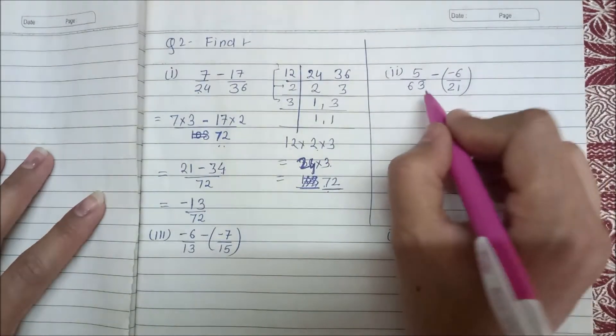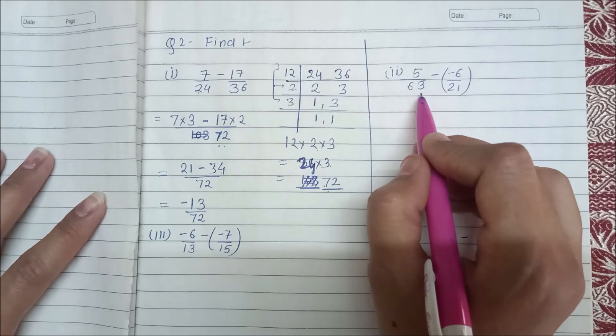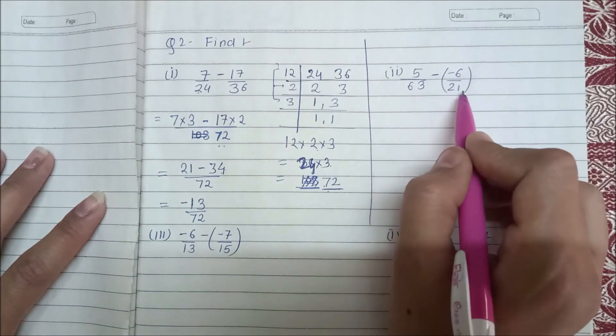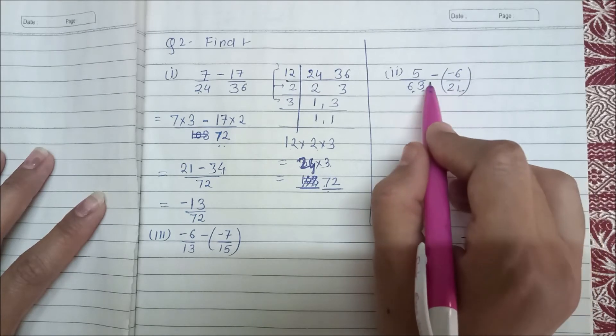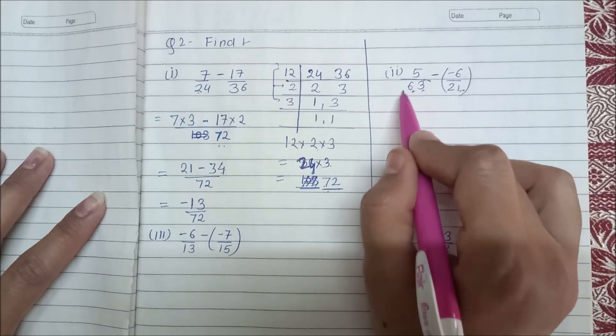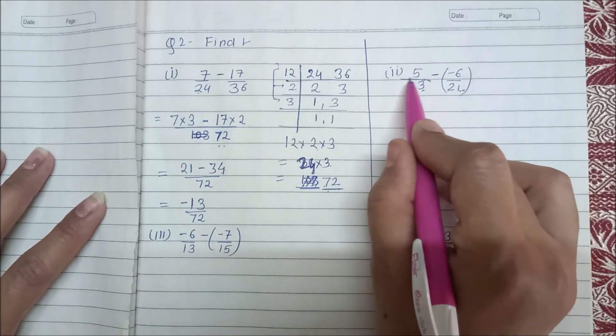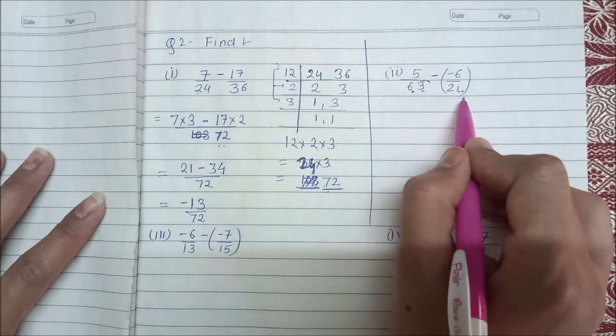Next we will see. We have given 5 upon 63 minus 6 upon 21. Here we have to find the common denominator. I have told you that the big number, we have to see 63 in the table.